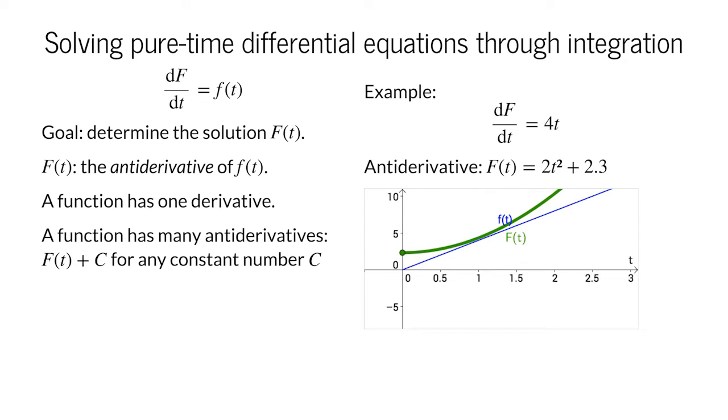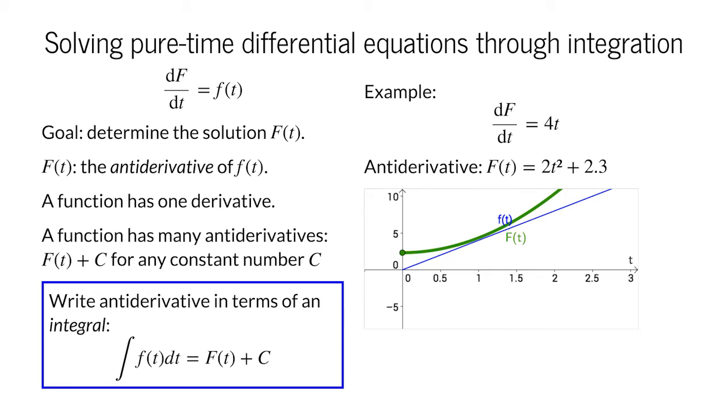We have another name for the antiderivative, the integral of the function f of t, which we write like this. The curvy symbol is the integral sign, and we read it as the integral of f of t dt. The integral takes little f of t as the input and outputs the antiderivative, capital F of t plus c.